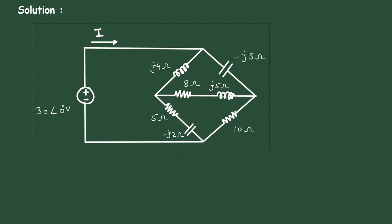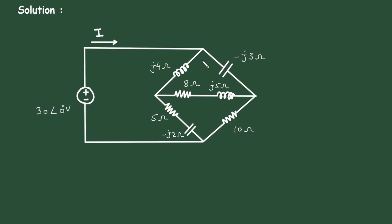Here we can see this upper part forms a delta connection. So what we will do, we will convert this delta to a star connection, then we will simplify the circuit. Let's convert this delta into its equivalent star connection.